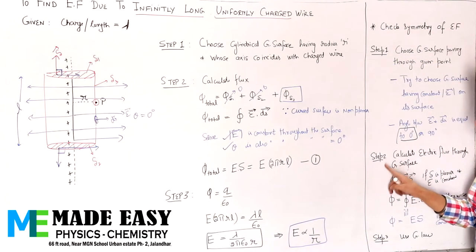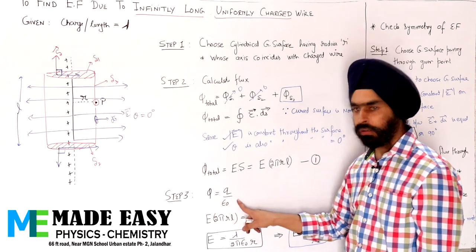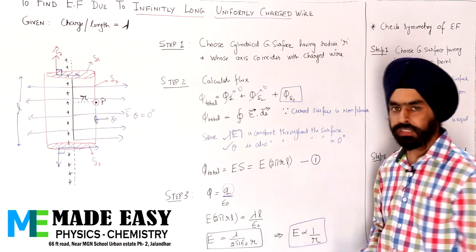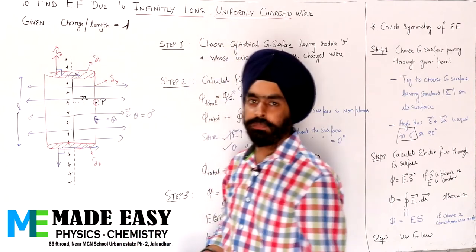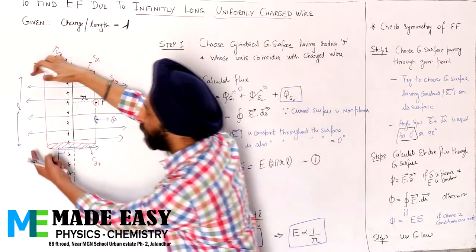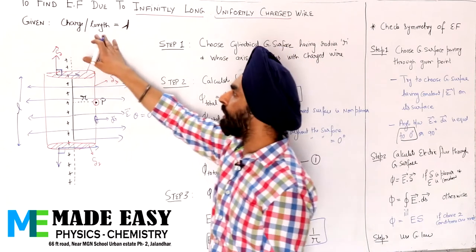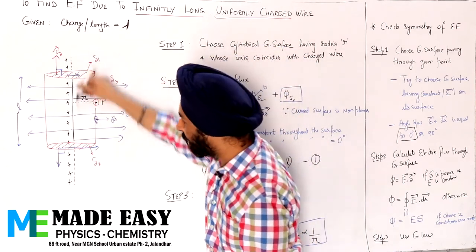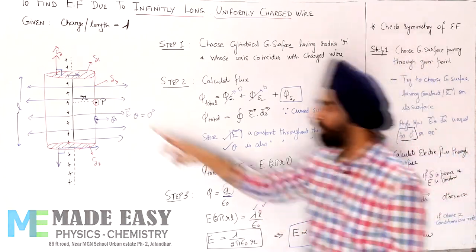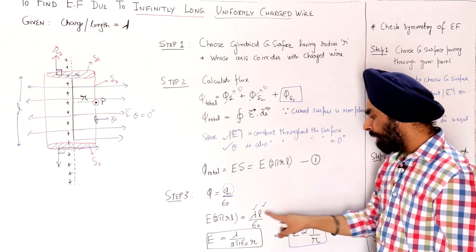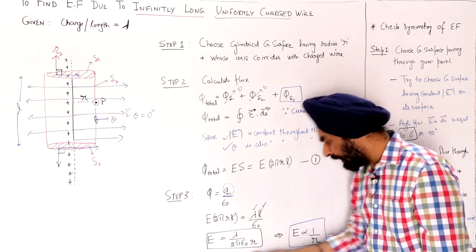Step 3: use Gauss's law — flux = charge enclosed / ε₀. Substituting our flux expression, we need the charge enclosed by the Gaussian surface. The wire is infinitely long, but our Gaussian cylinder has length l. Given charge per unit length is lambda (λ), the charge inside length l is: Q_enclosed = λ × l. So the equation becomes E × 2πrl = λl / ε₀. Cancelling l from both sides gives us the electric field expression.